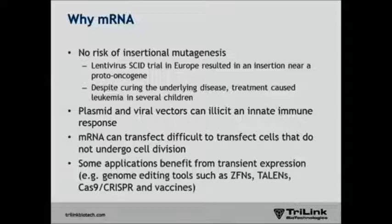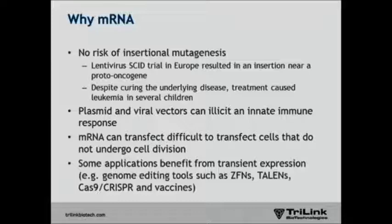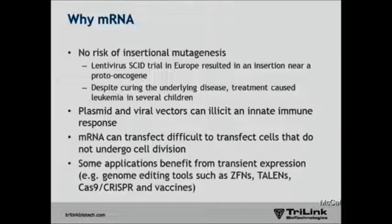One of the main reasons that people have become interested lately in messenger RNA is that there have been some issues in some clinical trials — for example, in a SCID trial in Europe with a lentivirus that resulted in insertional mutagenesis and leukemia in the children that were treated. Plasmid and viral vectors are commonly used in gene therapy, but they can enlist an innate immune response. mRNA has the advantage that it can transfect difficult-to-transfect cells because the target compartment for the mRNA is the cytoplasm.